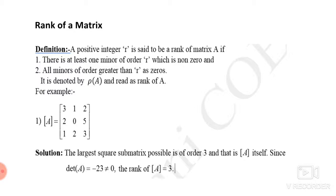So this is the meaning of the definition: a positive integer R is said to be rank of A if rank of A equals R, meaning there is at least one minor of order R which is non-zero. Minor means finding the determinant of a submatrix. If the determinant of the complete matrix is not zero, its rank will be 3 for a 3×3 matrix.